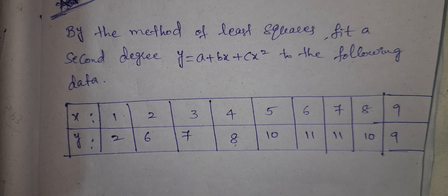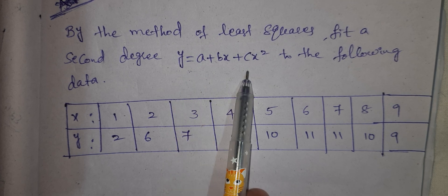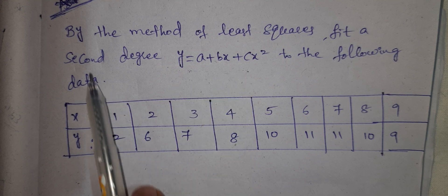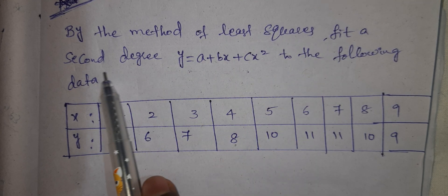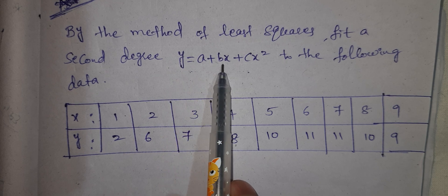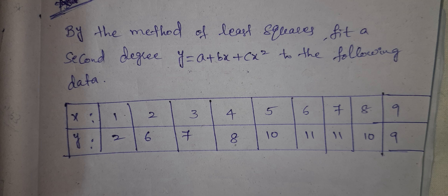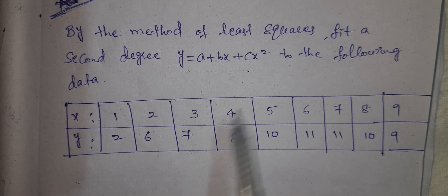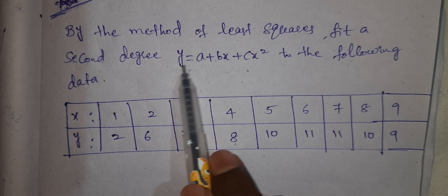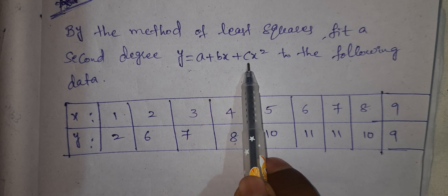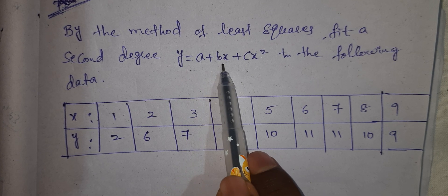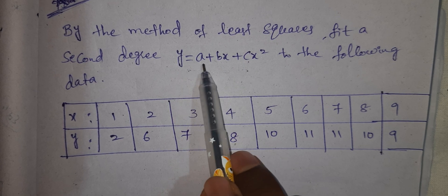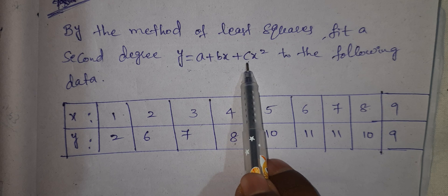We are doing a second degree polynomial. In a second degree polynomial, we have one main important equation. By the method of least squares, fit a second degree y equal to a plus bx plus cx squared to the following data. We have to mention y equal to a plus bx plus c.